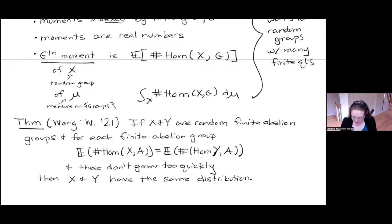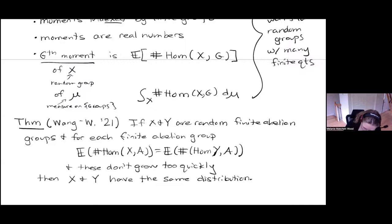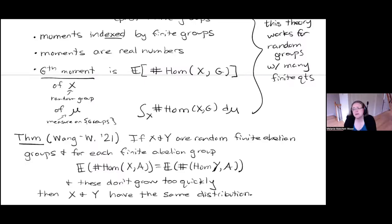Stepping back: I have some distribution on finite abelian groups, and I'm saying I could ask — if I take something random from this distribution and ask on average how many homomorphisms does it have to Z/2Z, how many to Z/3Z, how many to Z/4Z, how many to Z/2Z × Z/2Z — if I ask this for every finite abelian group, then as long as those numbers don't grow too quickly, those moments characterize the distribution completely. The bound we give has counter-examples just beyond it — just beyond the bound we give for growth, you can find distributions with different distributions but the same moments.